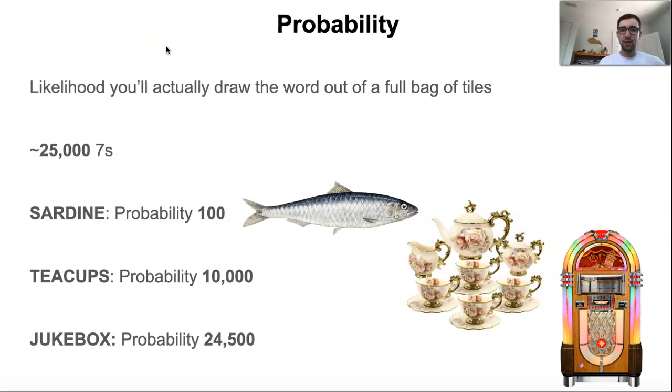An example of a more middling probability word would be teacups, which is a probability roughly 10,000, so pretty close to the middle of all the sevens as far as probability goes. And the reason why teacups is somewhere in the middle is it doesn't have any of the power tiles like jukebox that only occur once in the bag. But it does have a C and a P, each of which only occur twice. So that's going to make it much less likely than something such as sardine that only has tiles that occur four or more times in the bag.